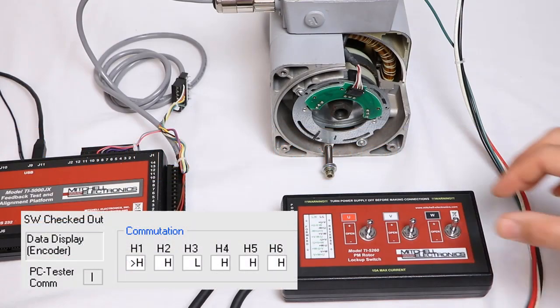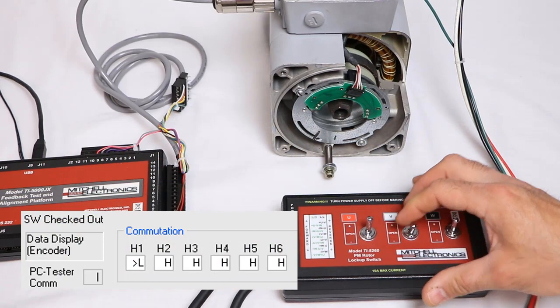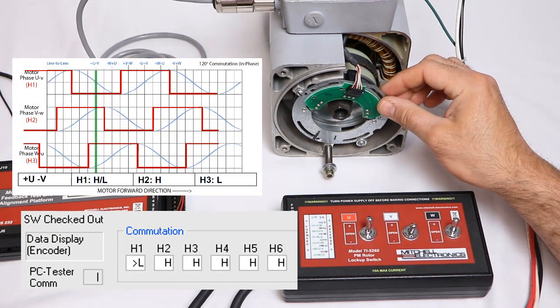To set the alignment, we simply lock the motor and adjust the sensor back and forth until we are as close as possible to the toggling edge.